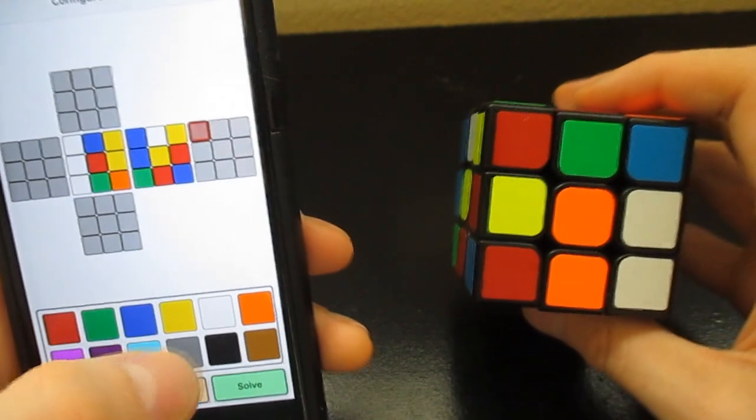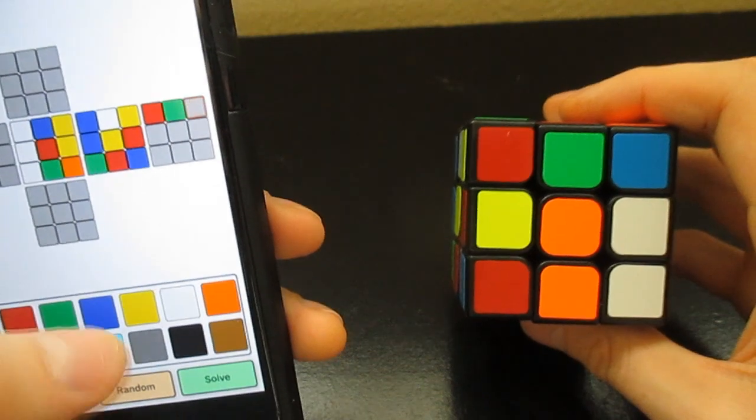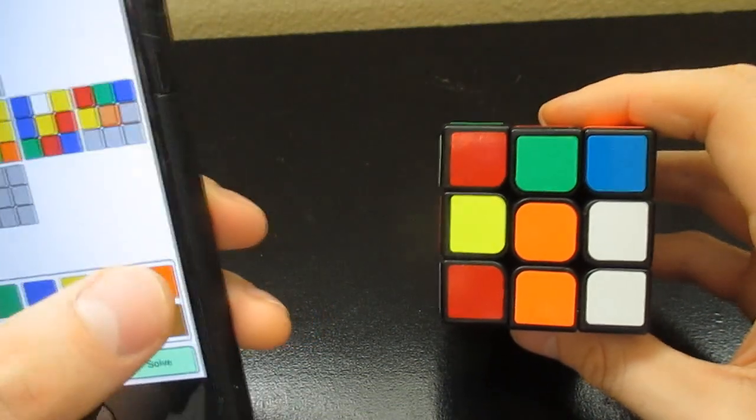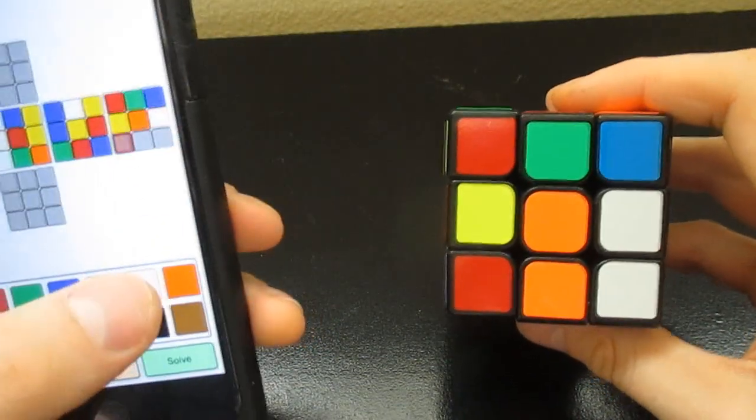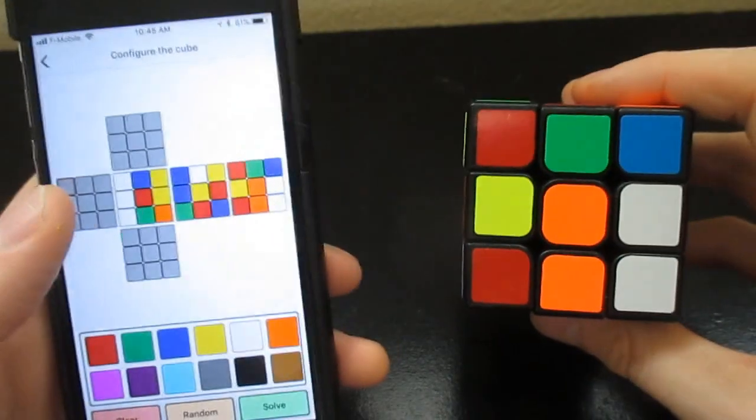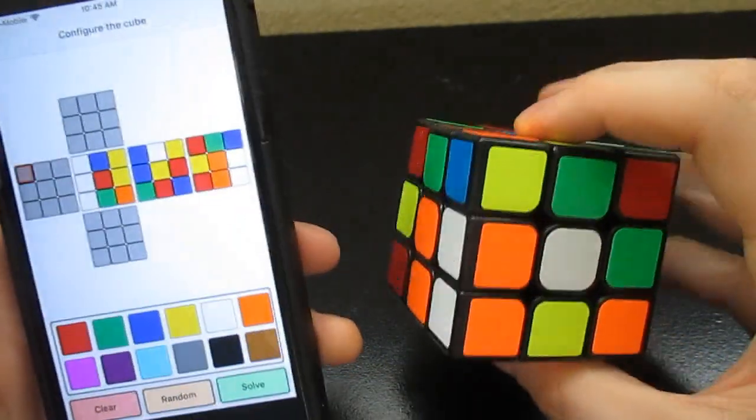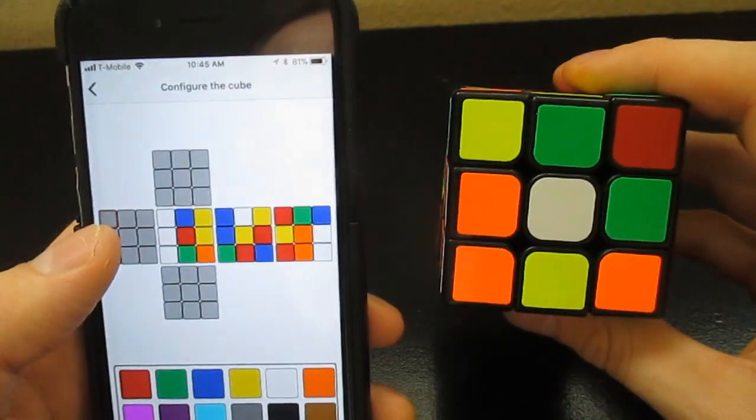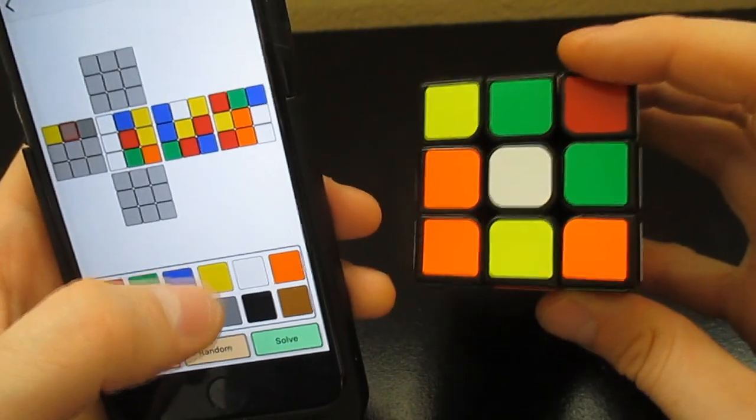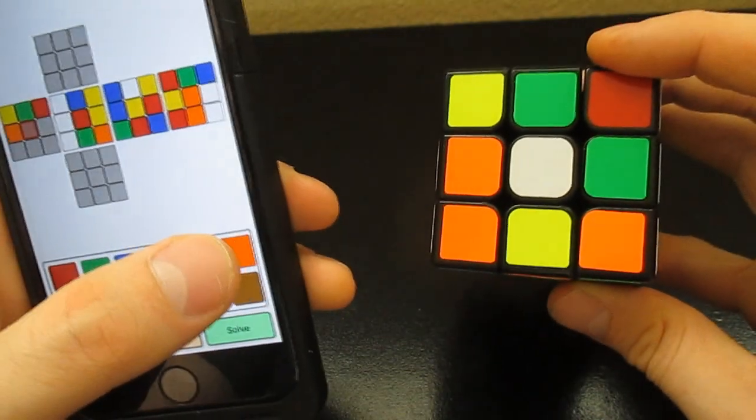So again, I'm going to turn the cube here and that's the other side here. So the other side here, red, green, blue, then yellow, orange, white, red, orange, white. So far we've got three sides.